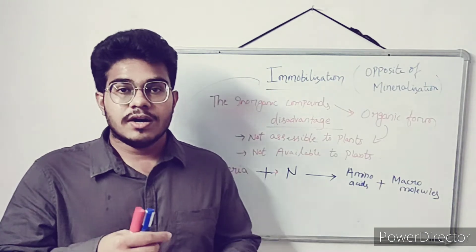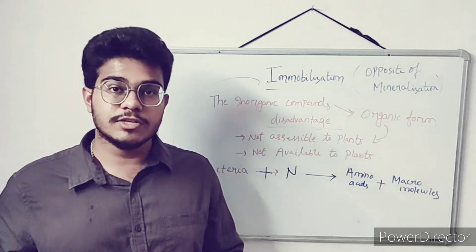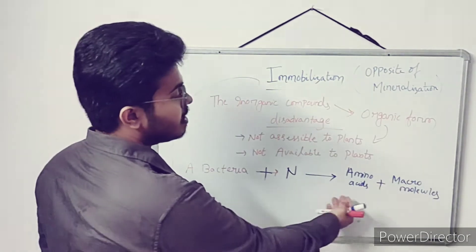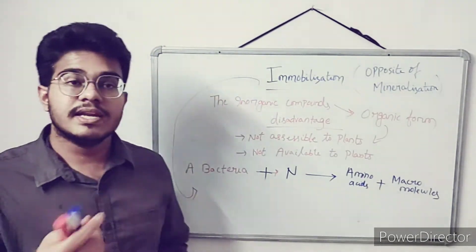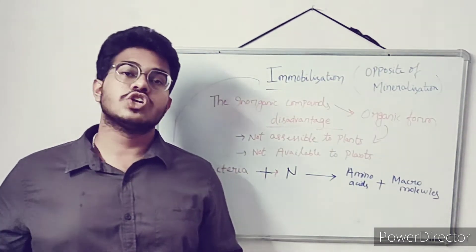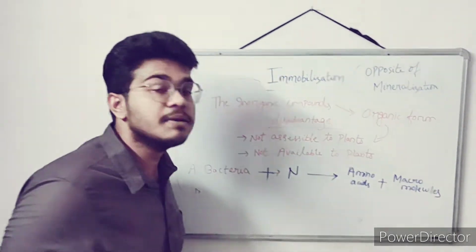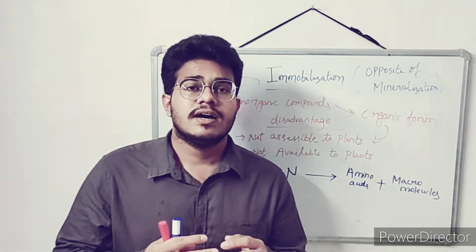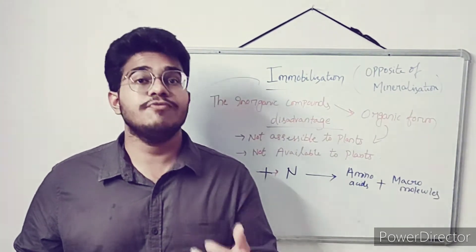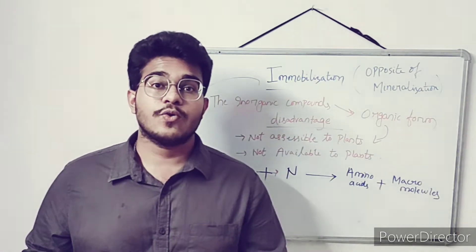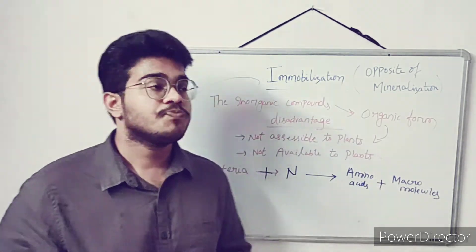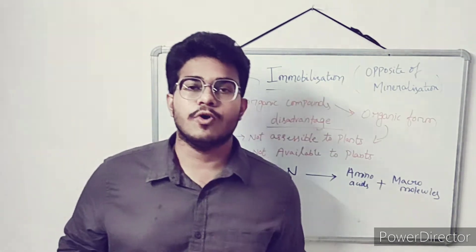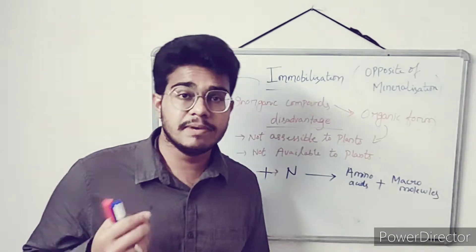So immobilization is just the opposite of mineralization. Mineralization and immobilization are two reverse processes: in mineralization the nutrients are available to the plants, and in immobilization the nutrients are not available to the plants. The reason is that in immobilization bacteria combine with nitrogen to form amino acids and macromolecules, but in mineralization the insoluble form gets converted into the soluble form. So this is all about immobilization.